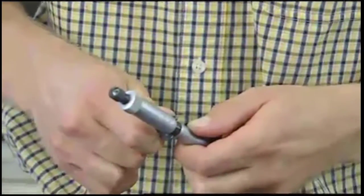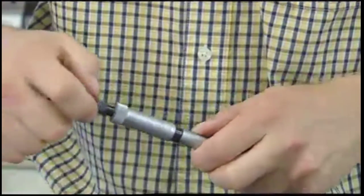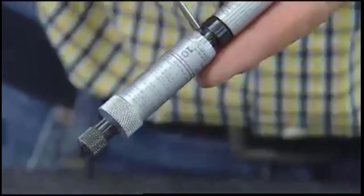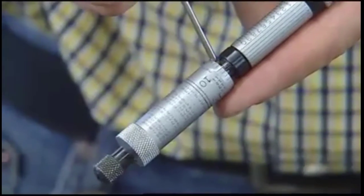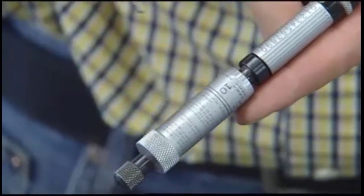Then adjust the spanner under the thimble with a micrometer spanner wrench. After adjusting the spanner, place a few drops of instrument oil on the threads.